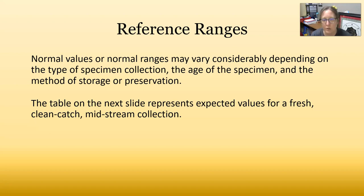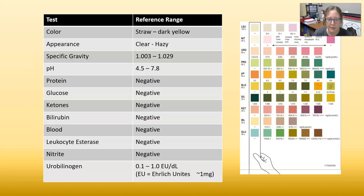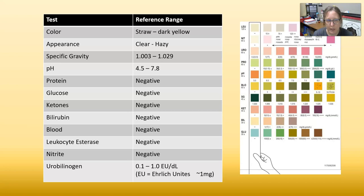The reference ranges on the next slide represent a fresh clean catch midstream collection. The color should be straw to dark yellow, and the appearance should be clear to hazy. Specific gravity can range from 1.003 to 1.029, and pH can be 4.5 to 7.8. Protein, glucose, ketones, bilirubin, blood, leukocyte esterase, and nitrites should all be negative. Urobilinogen should be between 0.1 and 1.0 EU per deciliter.